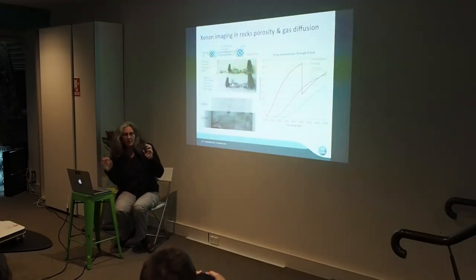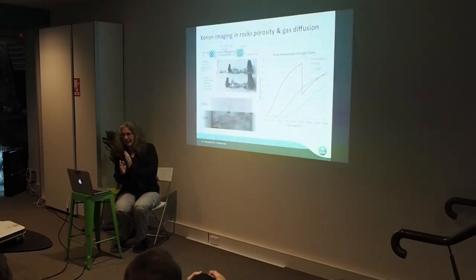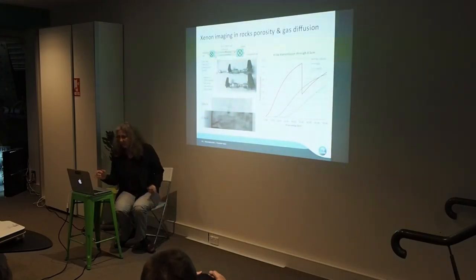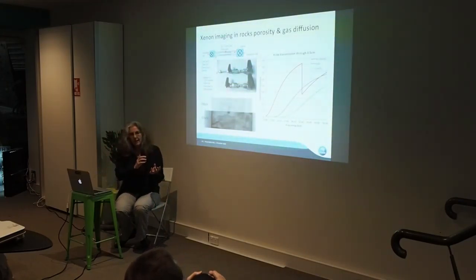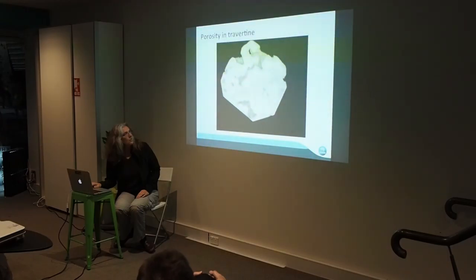We're using Xenon because you can actually see it with X-rays, and it has a special property: at one X-ray energy it's really transparent to X-rays, and at a neighbouring energy it's really absorbing. So if you take two images and subtract one from the other, you end up with an image that just has the Xenon gas in it, because the absorption of all the other things doesn't change. So we get images which separate out where the Xenon is and where the sample is. We're using this technique to look at porosity in rocks.